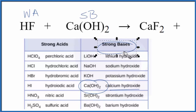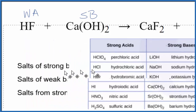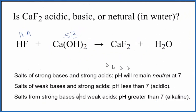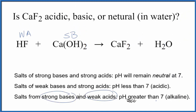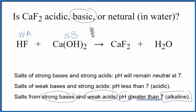Now we can use the rules. On our rules, we look for weak acid and strong base — here's strong base, weak acid, strong base. And the resulting solution should have a pH that's greater than 7. We call that alkaline or basic. So in answer to our question whether CaF2 is acidic, basic, or neutral in water, according to our rules, we should have a basic solution.